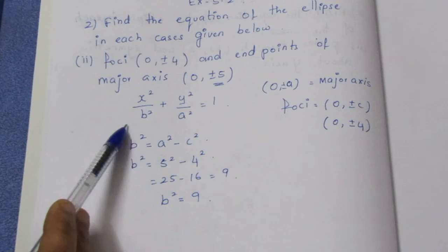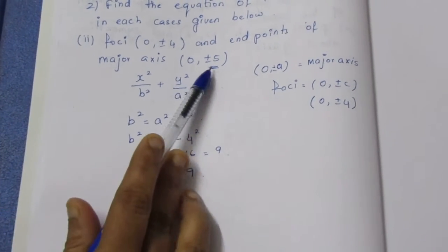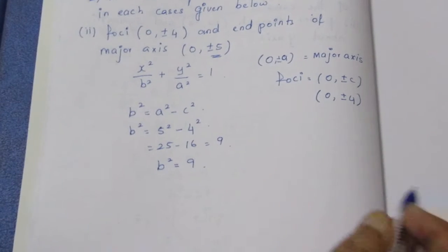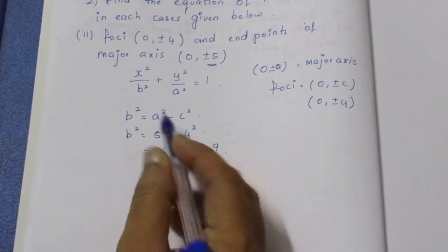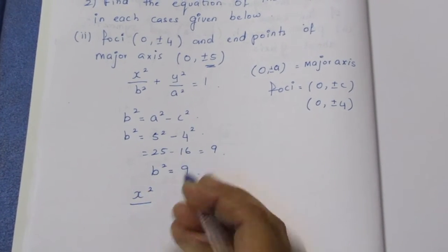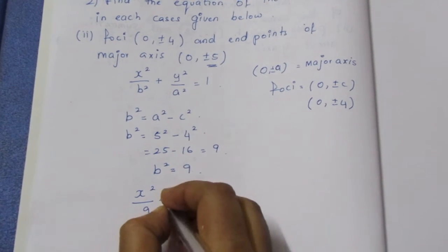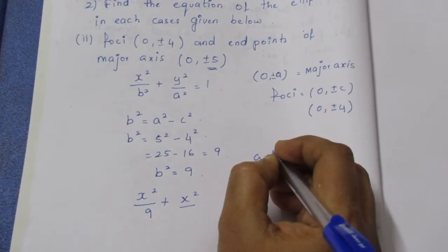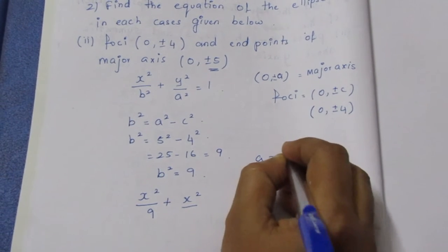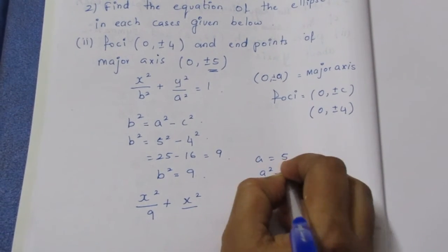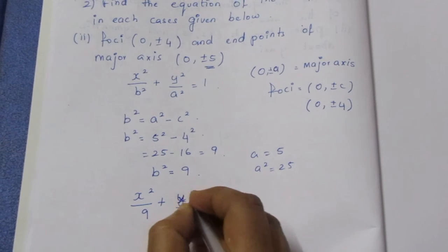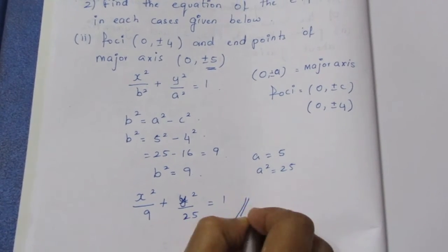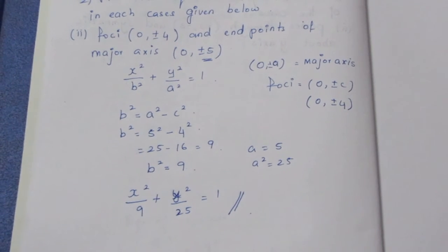Direct substitution. Since the major axis is on the y-axis, we substitute: x² by b² (b² = 9) plus y² by a² (a = 5, so a² = 25). Therefore the equation is x²/9 + y²/25 = 1. That is the final answer for this sum.